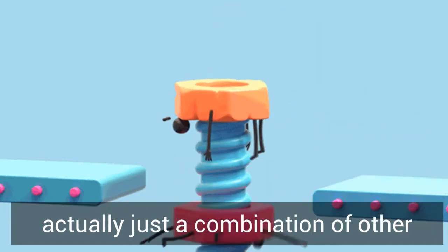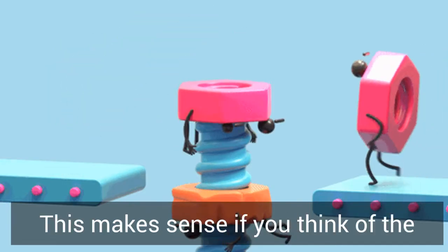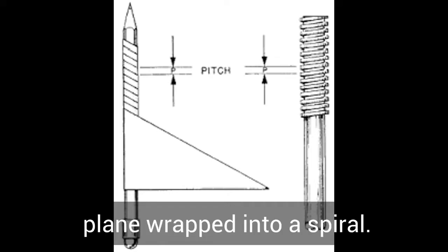Some people would say that a screw is actually just a combination of other simple machines. This makes sense if you think of the ridge as just one long inclined plane wrapped into a spiral.